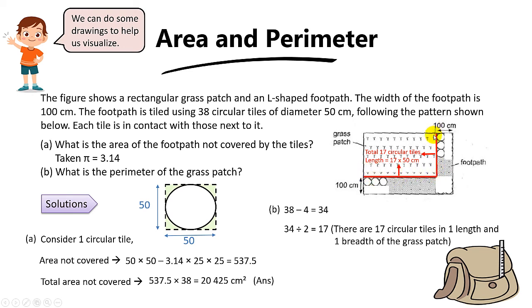To find the perimeter of the grass patch, you will need 2 lengths plus 2 breadths. So the final answer will be 17 times 50 times 2, because you need 2 lengths and 2 breadths. You should get a final answer of 1700 cm.